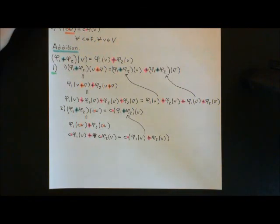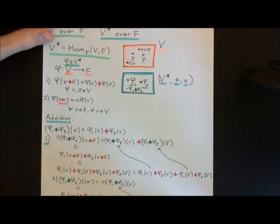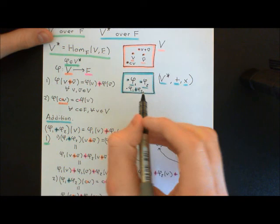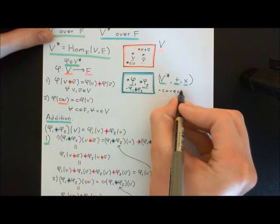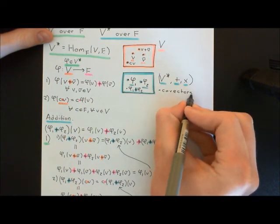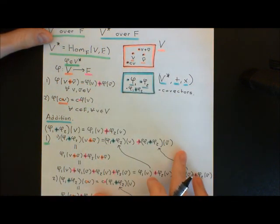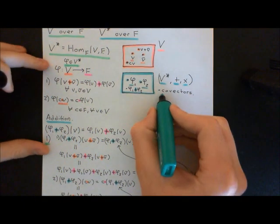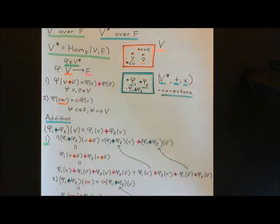Welcome back to this next video in which we are discussing dual vector spaces. So just before we go any further, there's one piece of terminology I'd like to give you, and that's the terminology for the elements of the dual vector space. The elements of a dual vector space are known as co-vectors. So we know that the elements of a vector space are called vectors; the elements of the dual vector space are known as co-vectors. This is common terminology.